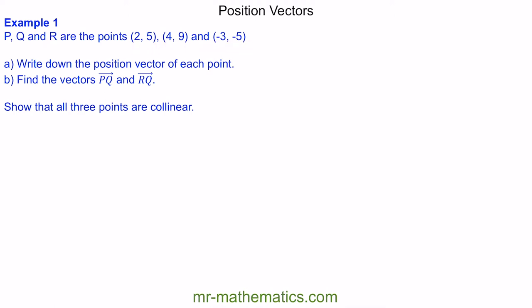We can see these points on a grid. Point P would be at (2, 5), so 2 across from the origin and then 5 up. This is the origin, which is our fixed point of reference. As a vector, we go from the origin to the point — we have 2 in the i direction, so 2i, and 5 in the j direction, so 5j. We can also write it in column vector form as (2, 5).